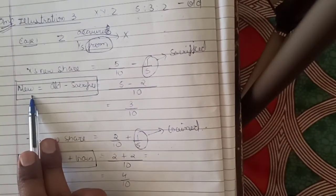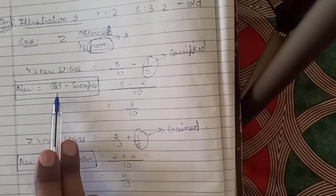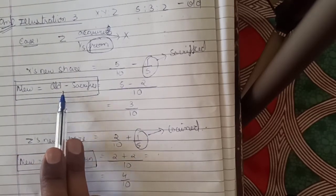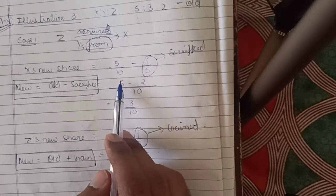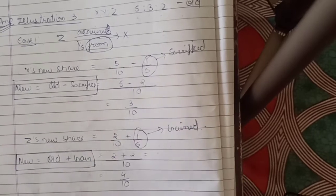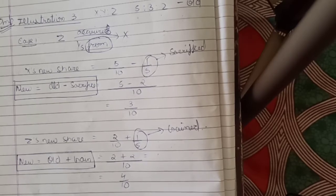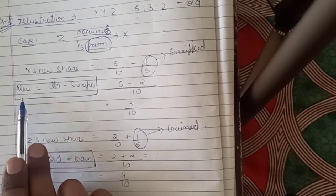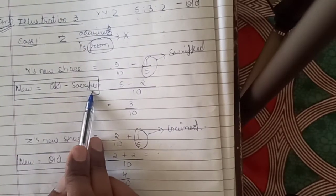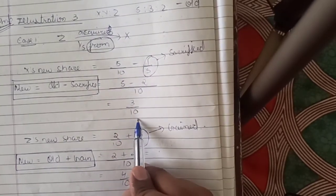The formula for new profit sharing share: new share = old minus sacrifice. If you want to use the formula, it is old minus sacrifice; otherwise you can do it directly — subtract from your old share the amount you gave to someone else. So 5/10 minus 1/5 comes to 3/10.